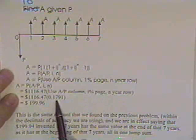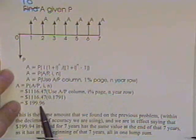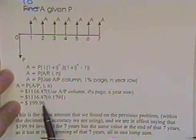If you go in and you use the A over P column on the 6% page on the seven year row, you'll find it's 0.1791. And so it also comes out pretty close to $200, $199.96.